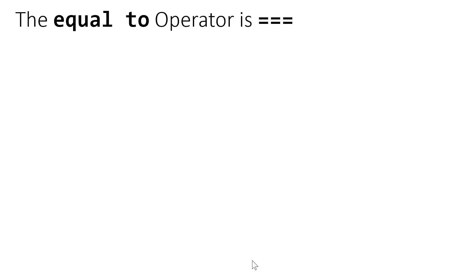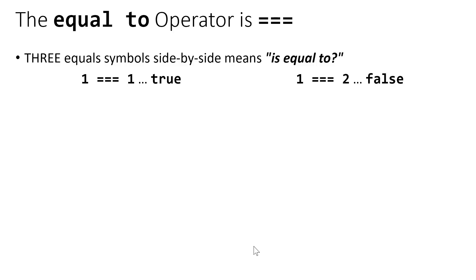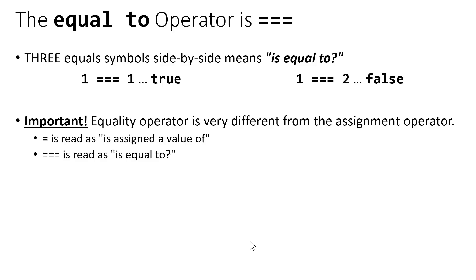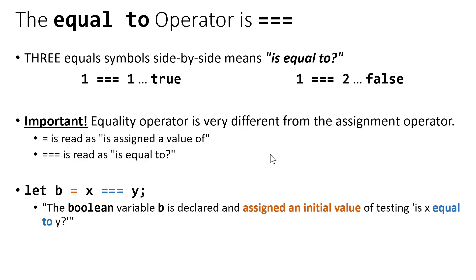The equal to operator is three equal symbols side by side. This is asking a question, are these two values equal to one another? So is one equal to one? Yes, that's true. Is one equal to two? No, that's false. As I mentioned in the variables video, assignment is not equal to. So you can see here the equal to operator is three equal symbols, whereas the assignment is a single. So you would read the single equal symbol as is assigned a value of, and the triple equal symbol as is equal to. The is equal to is a question and the answer is either going to be true or false. It's a Boolean expression.